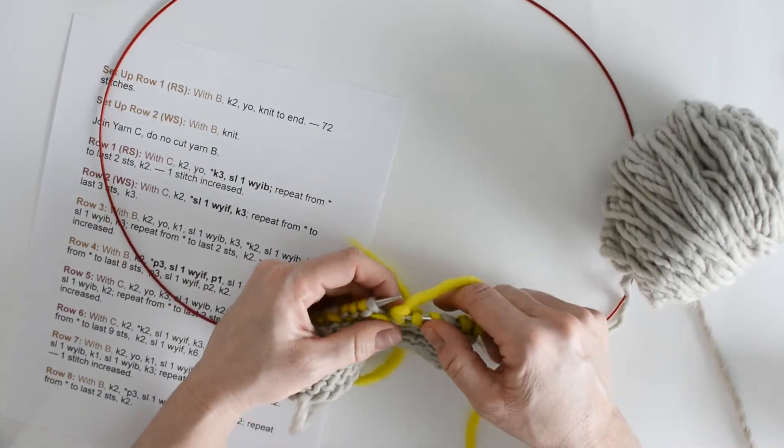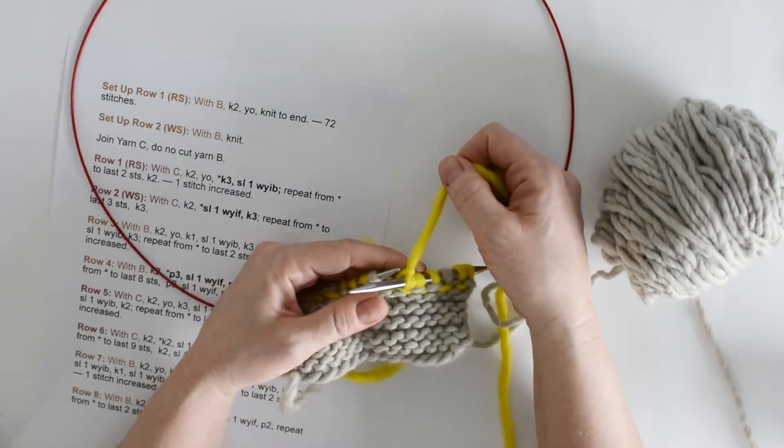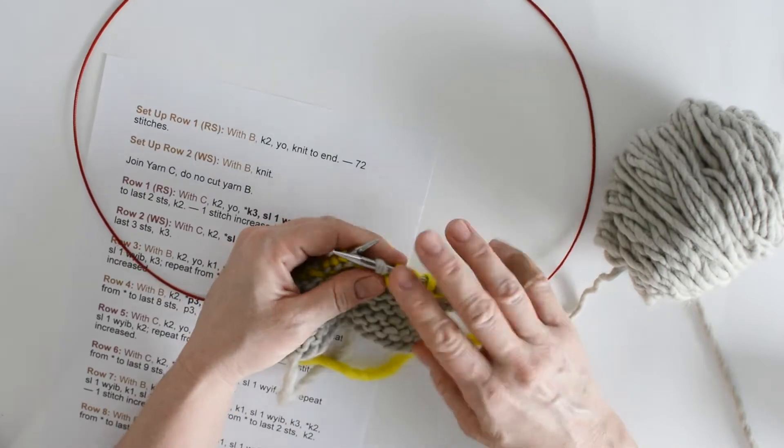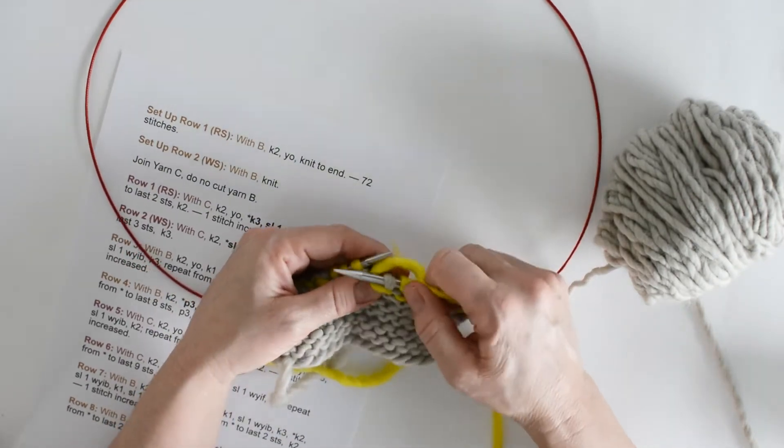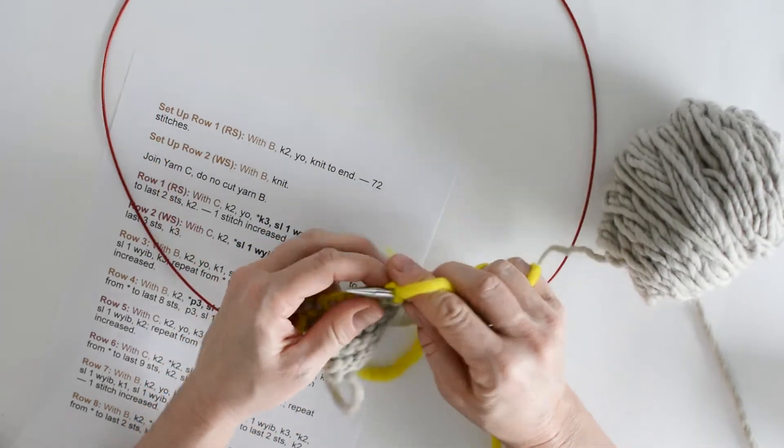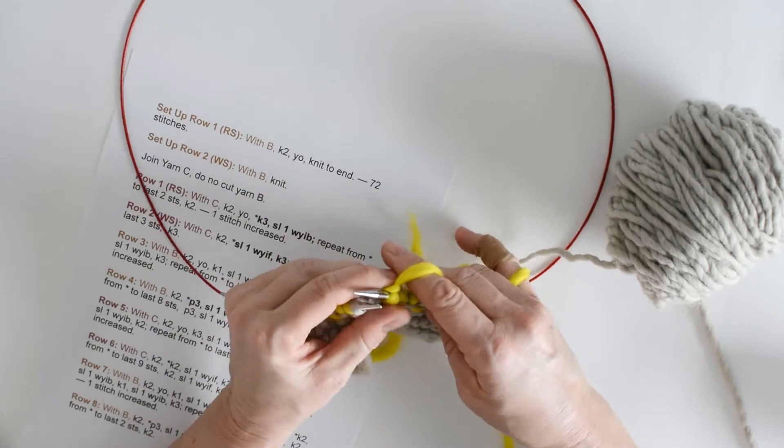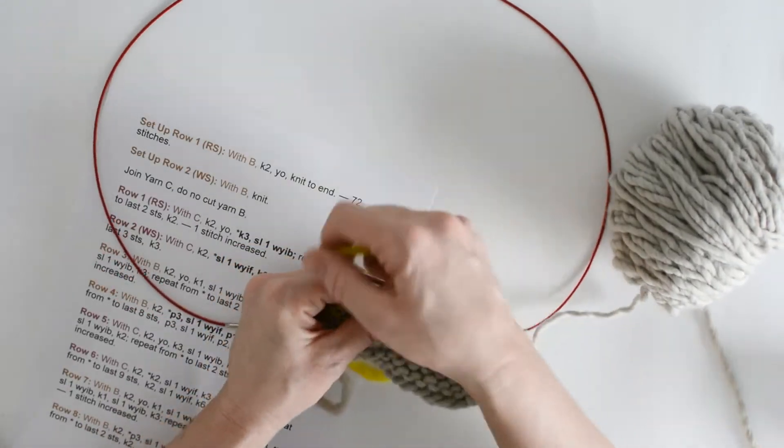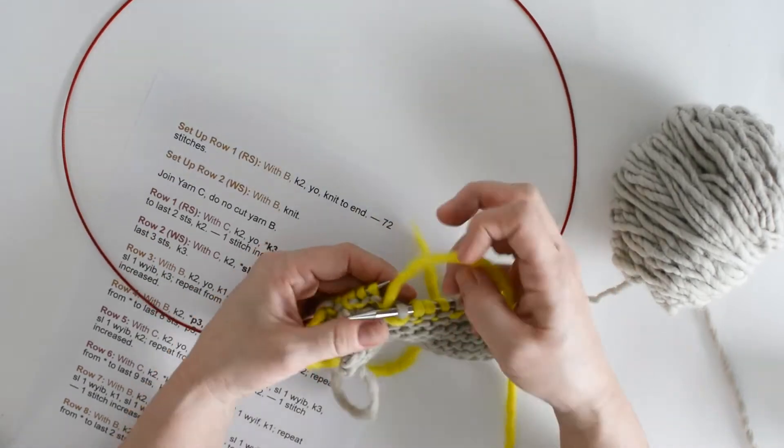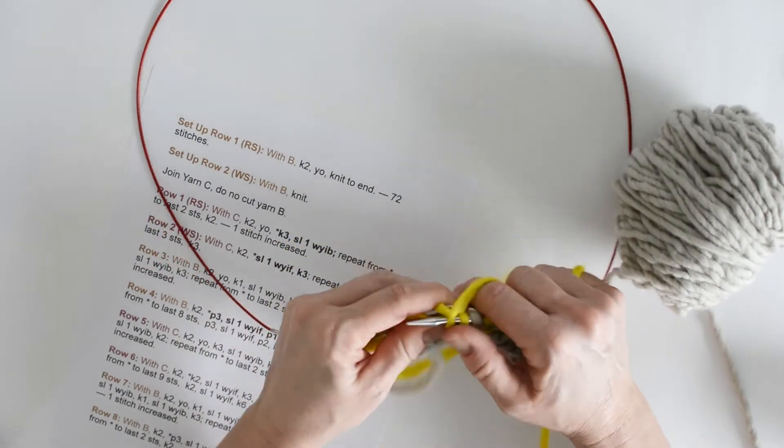Now before I can knit the next stitch, I need to take it to the back again. And we want to still be sure we keep that float loose. And now we're going to knit 3. So let's do that again. Alright, we're going to bring the yarn to the front, slip our stitch purlwise, keep those stitches spread out on the needle, move the yarn to the back, and knit 3. And it looks like we have room to do one more of those.